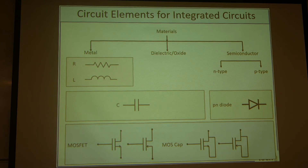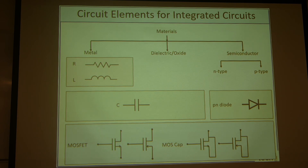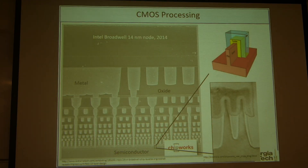The MOSFET is also a basis for integrated circuits. I'll talk about the fabrication process guideline based on this MOSFET device. Also, if we tie the source and the drain junction together, we can make a semiconductor capacitor as well. So this is a brief summary of the circuit elements.